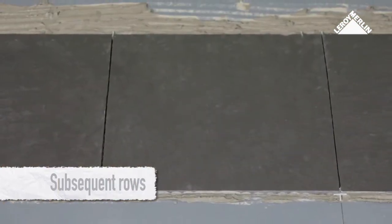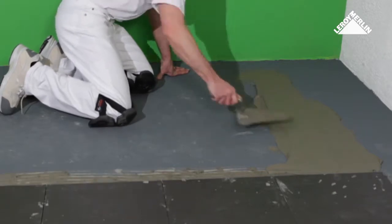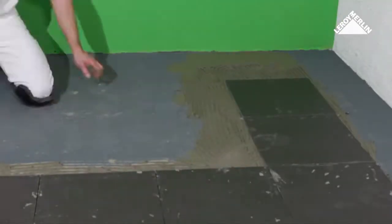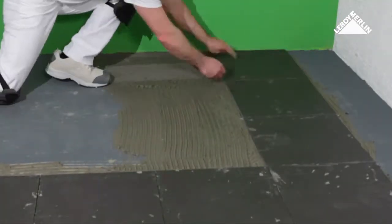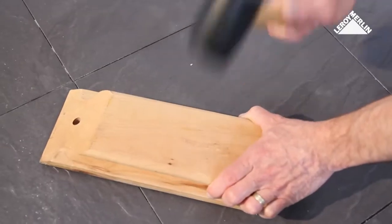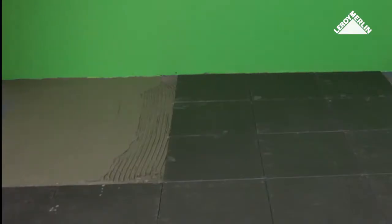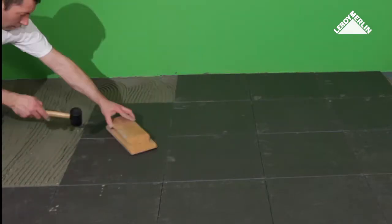Once the first row is laid, the work becomes easier and you can spread adhesive over a bigger area. When you have laid two or three rows, use the float.